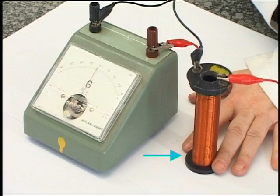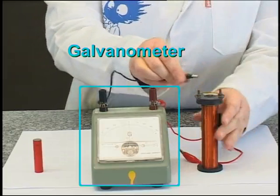We'll coil the wire like this to get more length of wire that passes by the magnetic field. Now, we connect this to a galvanometer.